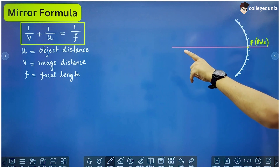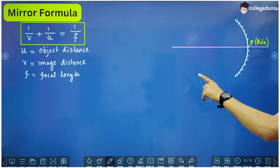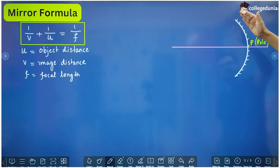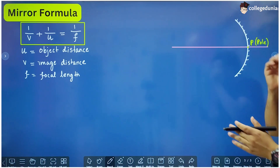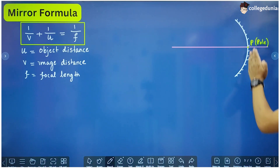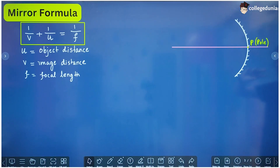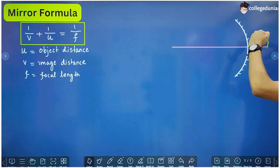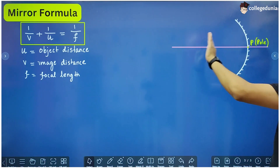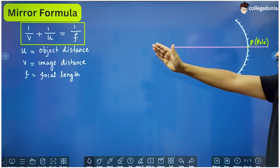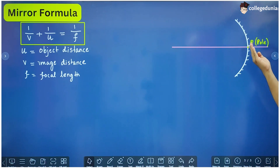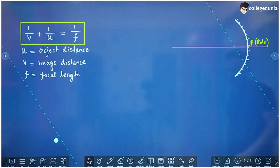When we derive this formula, we will use sign conventions. Imagine this is the x-axis with the origin at the pole and the mirror as the y-axis. Positive and negative directions follow exactly the Cartesian system. The positive direction of the y-axis is upward, the negative direction is downward, the positive direction of the x-axis is to the right, and the negative direction is to the left. Distances measured from the pole along the negative x direction are taken as negative, and those measured toward the positive x direction are taken as positive.